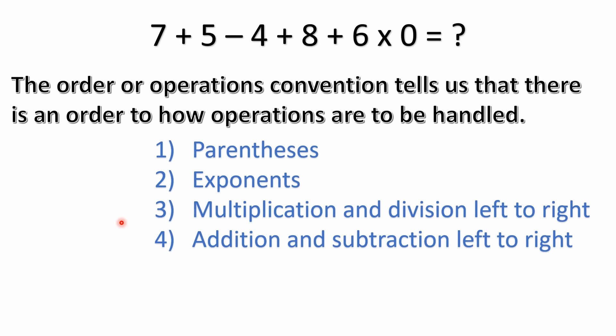If you remember the order of operations, the convention tells us there is an order to how operations are to be handled. First, we look for parentheses or brackets. Number two, exponents — you may refer to them as orders or indices; square roots fall into this category. Number three is multiplication and division, solved left to right. And then the fourth is addition and subtraction, also left to right.